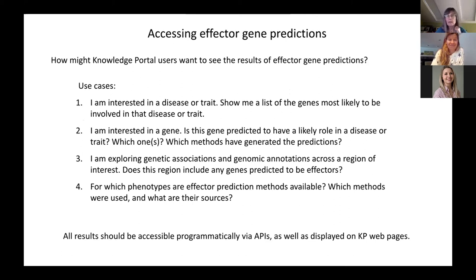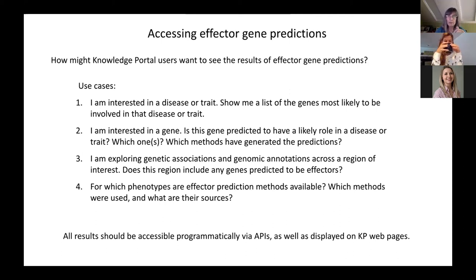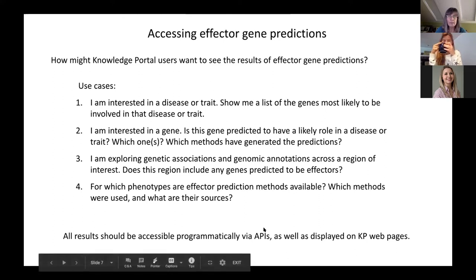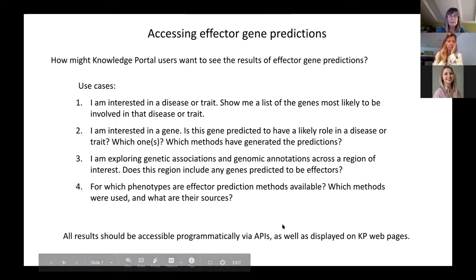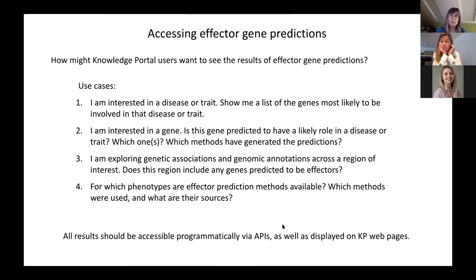How might you, as users of the portal, want to see these? Right now, the only way you can get to these predictions is through that landing page that lists the effector genes. I'm going to go through a few ideas about where in the portal you might want to see these. It goes without saying that, like other results in the portal, it would be nice to be able to access these results programmatically using APIs, as well as just looking on individual webpages.